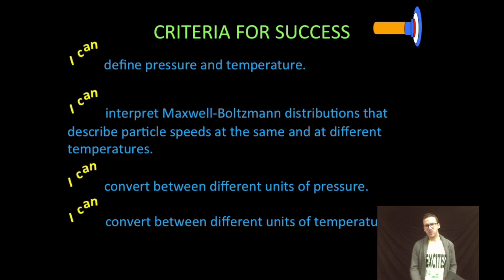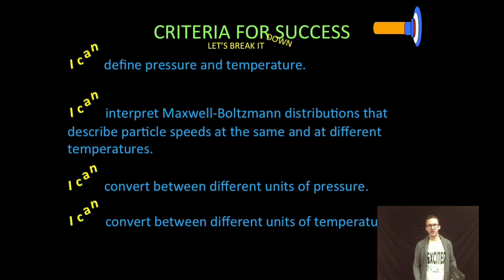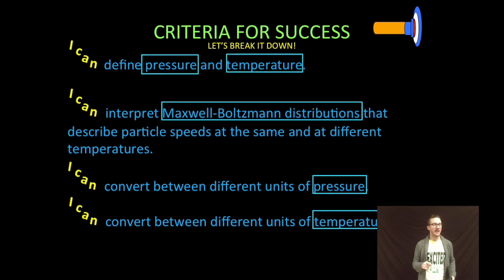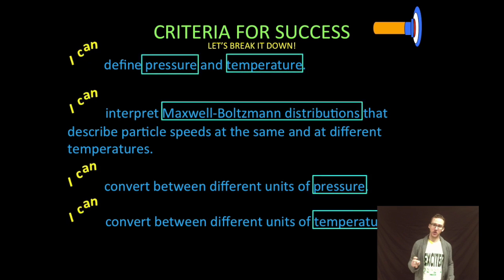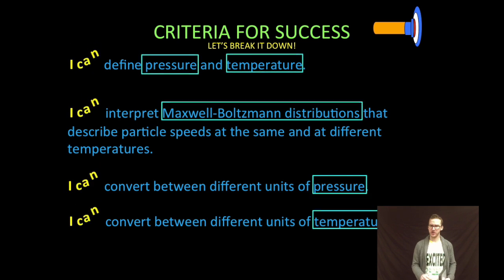So as we break that down, first thing we're going to do is define what the heck pressure and temperature are. Number two, we're going to interpret what are called Maxwell-Boltzmann distributions that describe particle speeds at the same and at different temperatures.